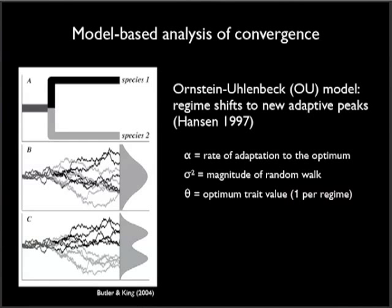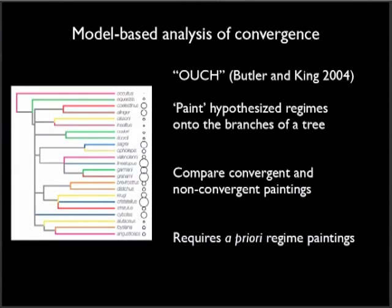An important advance allowed the use of evolutionary models containing explicit shifts between adaptive peaks. The Ornstein-Uhlenbeck model combines a stochastic random walk with deterministic attraction to one or more optimum trait values. And the OUCH methodology developed by Butler and King allows users to paint an adaptive hypothesis onto the branches of a tree, where different colors represent ecomorphs or habitats or other selective factors, and users can evaluate support for a convergent model in which the same selective regimes are found by multiple lineages.